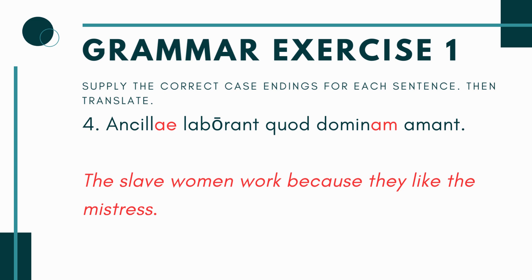In number four, you have ancilla blank, laborant, and domin blank, amant. We have plural verbs here — laborant and amant — so you're saying they work and they like. The only nouns are ancilla and domina. The answer is ancillae and dominam: the slave women work because they like the mistress. It wouldn't make sense to say the mistress works or the mistress likes. So you're saying the slave women work because they like the mistress.